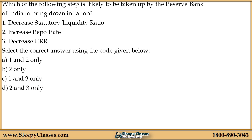Third question: Which of the following steps is likely to be taken by the Reserve Bank of India to bring down inflation? The options are: 1. Decrease Statutory Liquidity Ratio (SLR). 2. Increase Repo Rate. 3. Decrease Cash Reserve Ratio (CRR). Select the correct answer using the code given below.